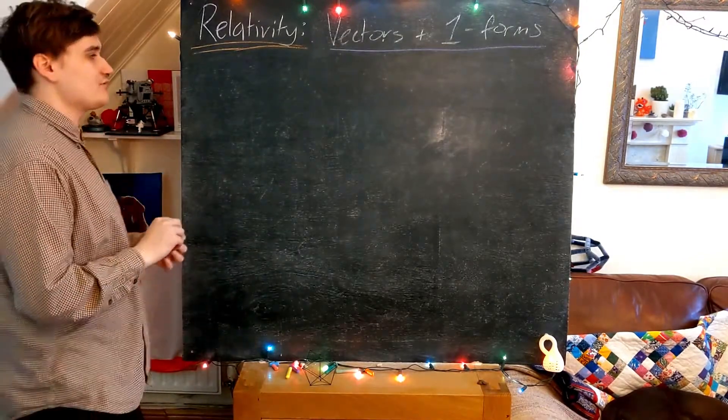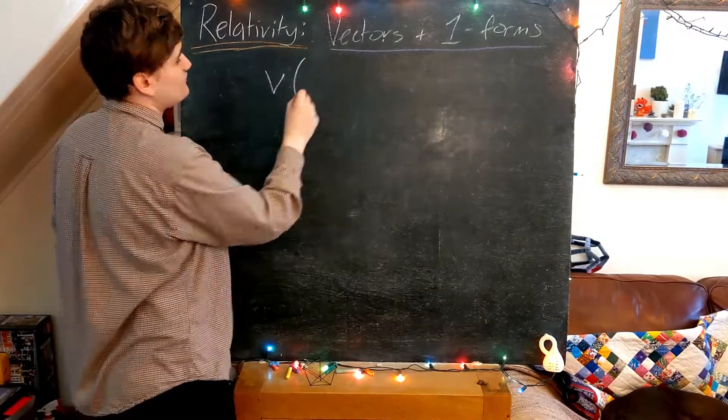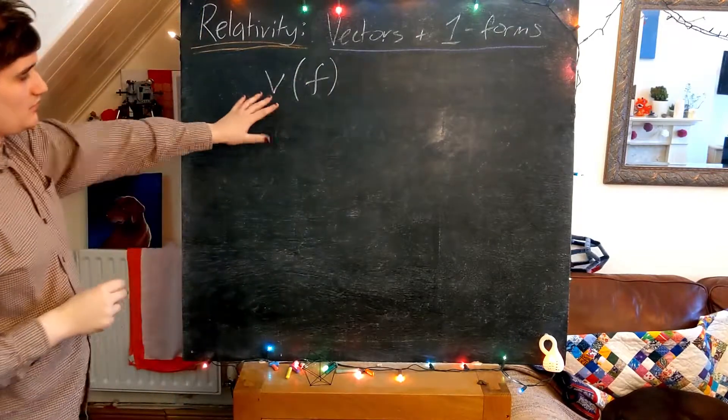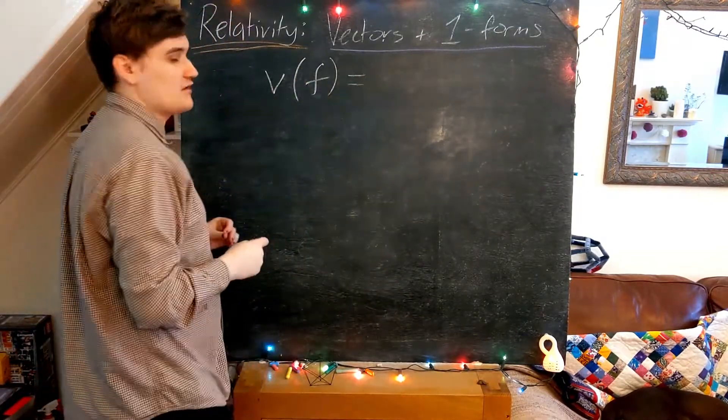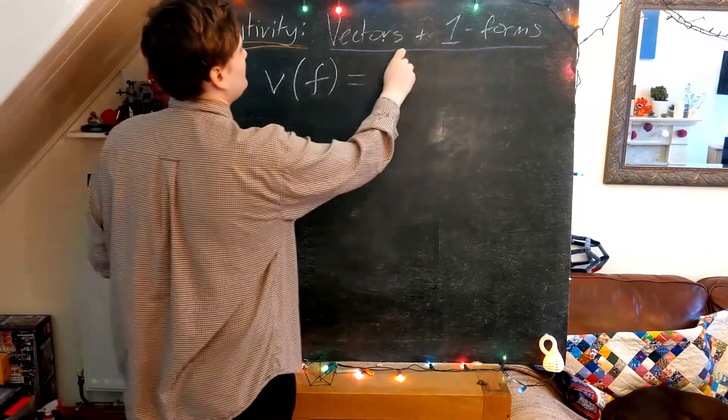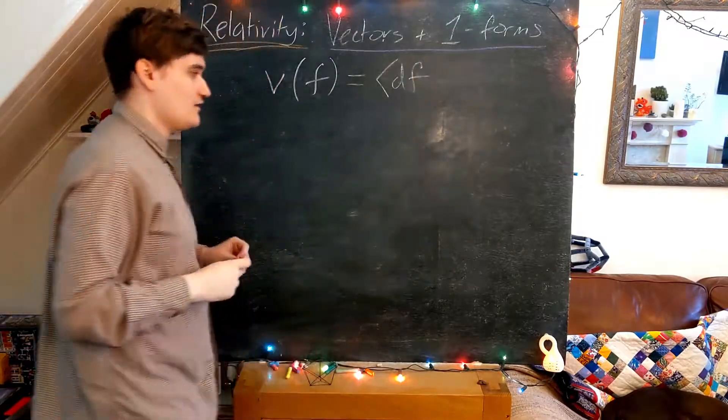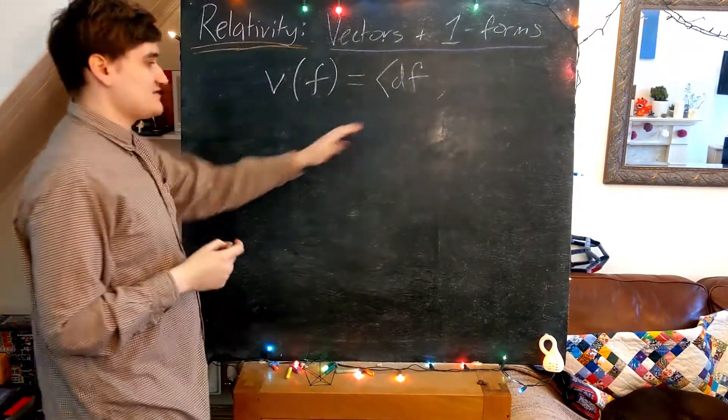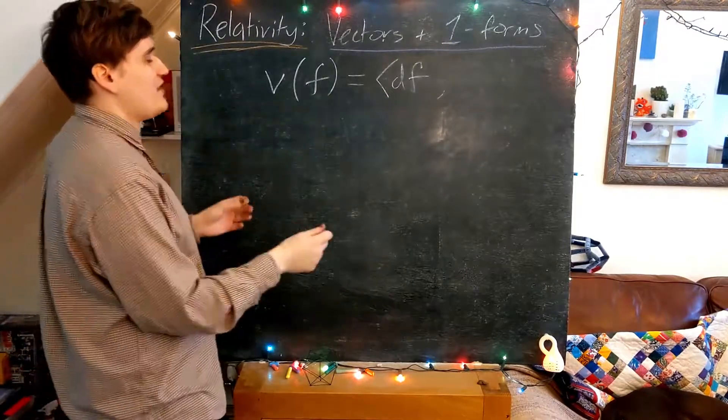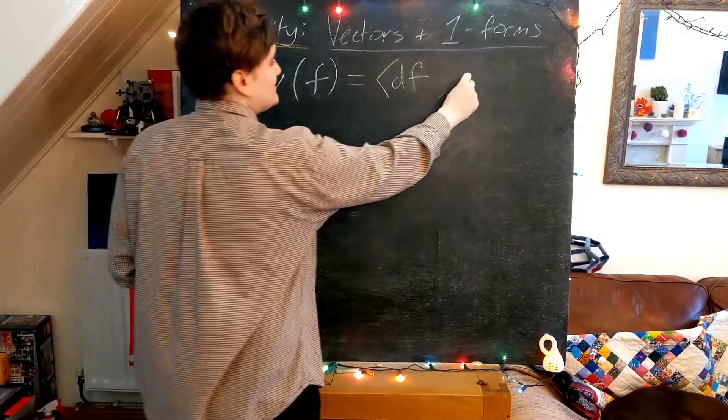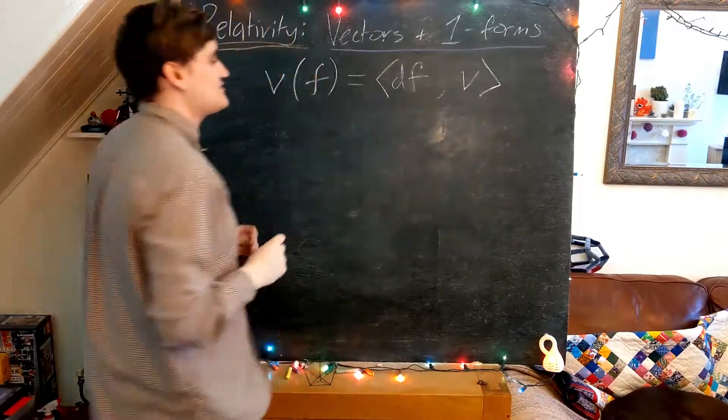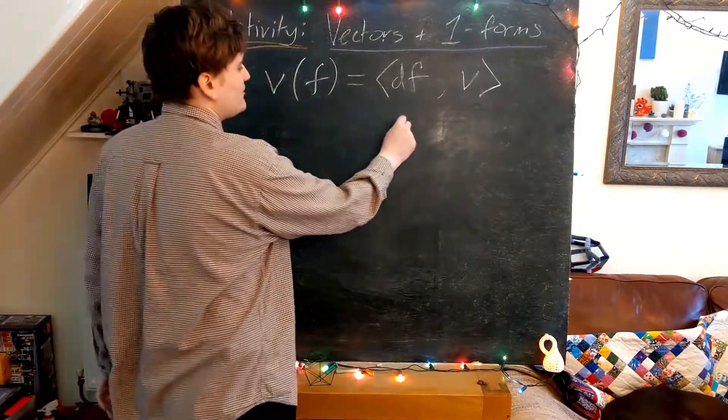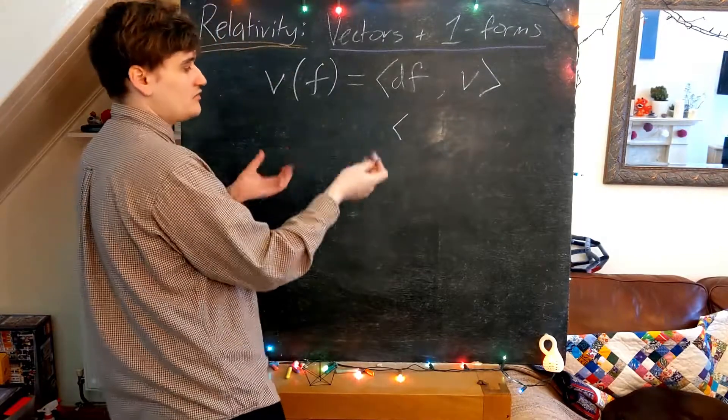So let's begin with a simple definition. A vector, when it acts on an arbitrary function, we can define this in the following way: by forming the one-form df, and now I'm introducing an angled bracket notation. Essentially this is just a way to represent a map, but this df object is going to map the vector.